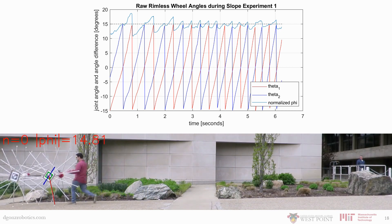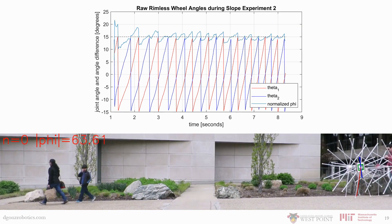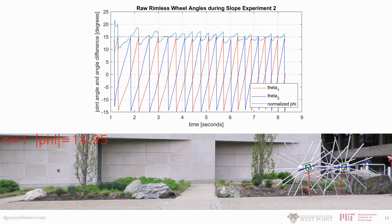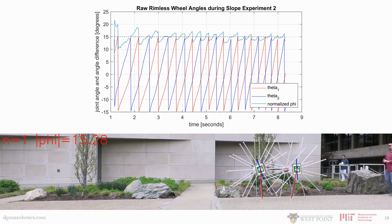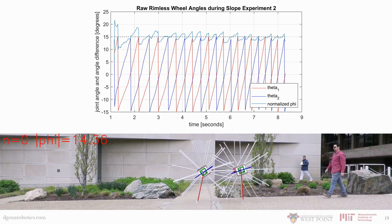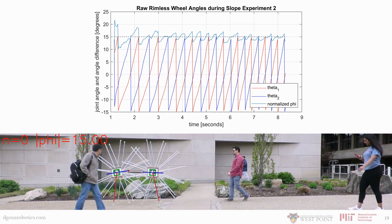The physical system converges faster than the simulation, which we hypothesize is because of unmodeled elastic impacts. The same convergence can also be seen in the second experimental trial with different initial conditions.